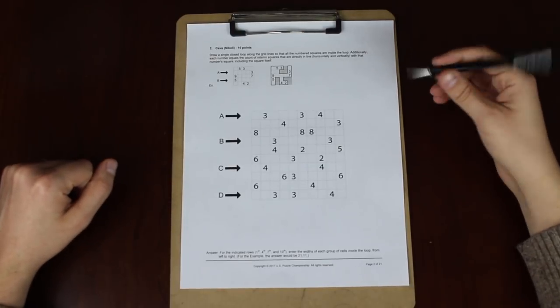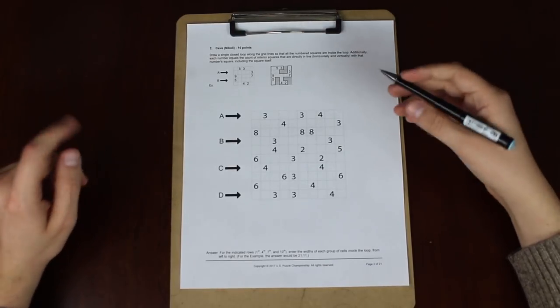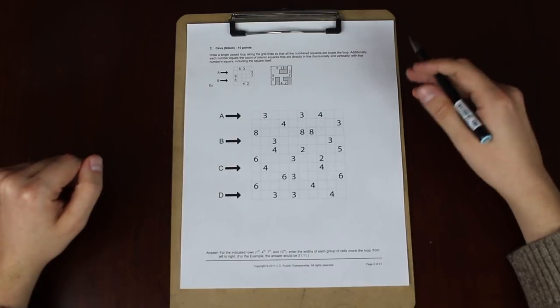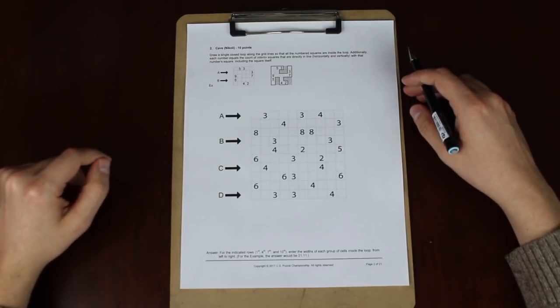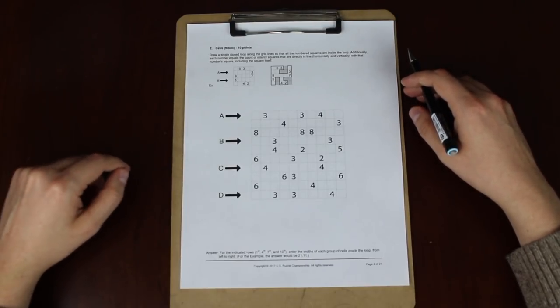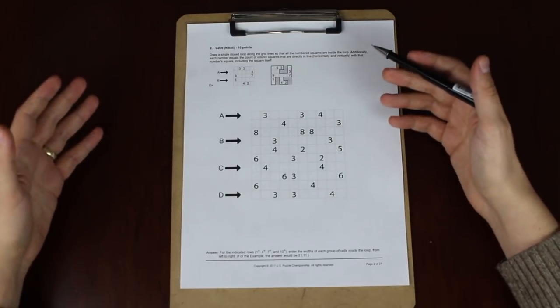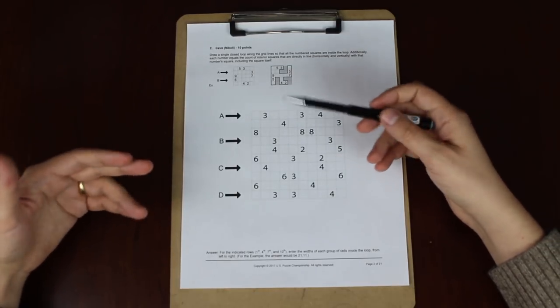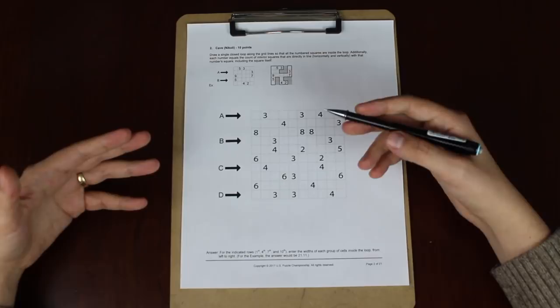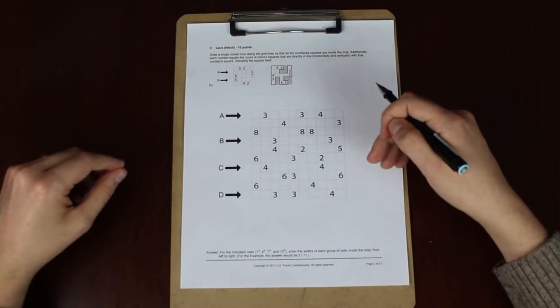Hey there puzzlers, my name is Fleb, and today we're going to be continuing our journey into the world of logic puzzles by taking a look at the second puzzle from last year's US Puzzle Championship. It's an example of a cave puzzle, and this one was made by Nikoli, which is one of the best Japanese logic puzzle manufacturers.